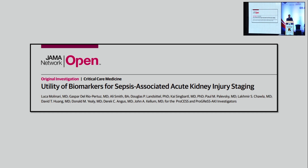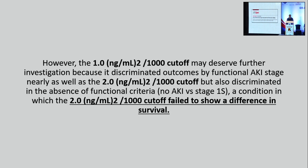We started using NephroCheck for staging kidney injury. Can we sub-stage kidney injuries as we have stages 1, 2, and 3? There is debate that if the cut-off limit is brought down to 1, we can identify multiple patients at risk of developing AKI during the disease course.